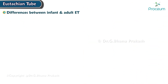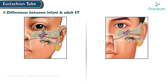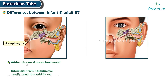Differences between infant and adult Eustachian tube. The Eustachian tube differs in infants and adults in various ways. In infants, the tube is wider, shorter, and more horizontal, which allows infections from the nasopharynx to easily reach the middle ear. The length ranges between 13 to 18 millimeters at birth, about half the size of the adult tube which is 31 to 38 millimeters, with an average around 36 millimeters.